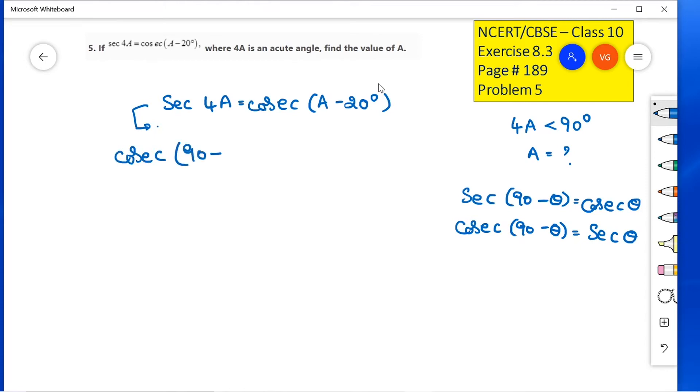In place of theta, I have 4A. So, I am writing cosecant (90 minus 4A) equals cosecant (A minus 20 degrees) on the right-hand side.